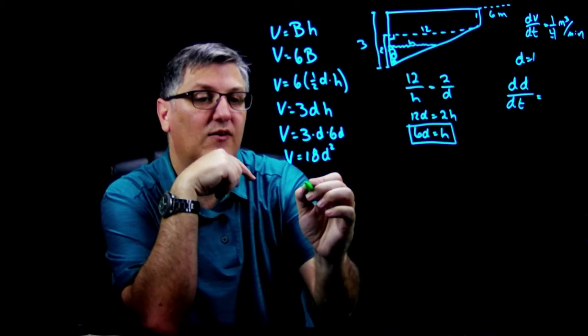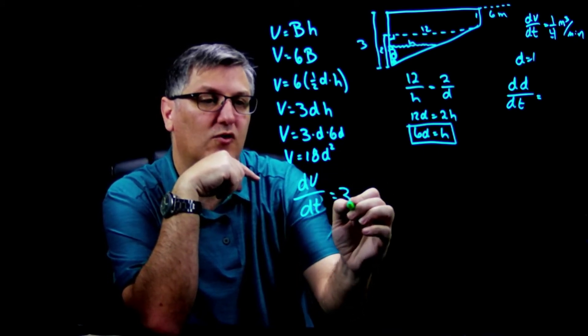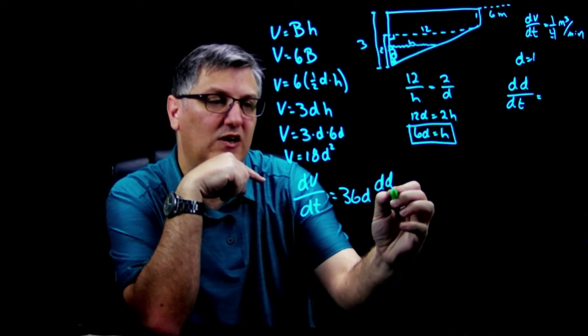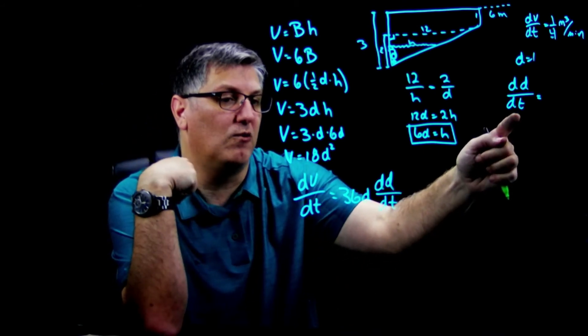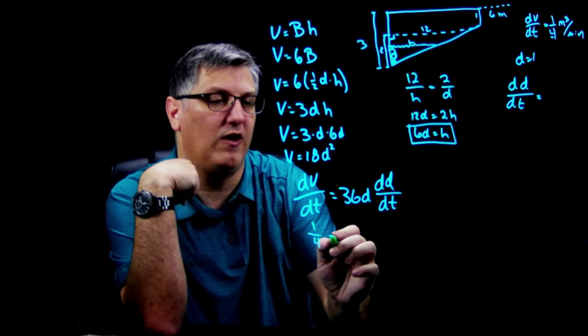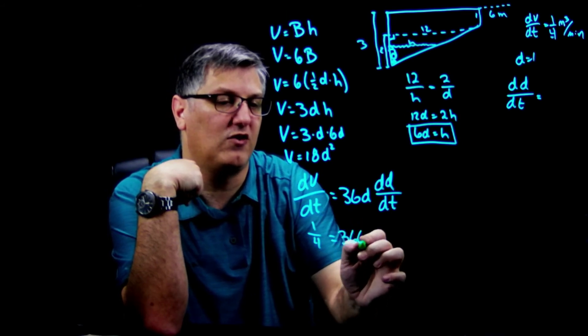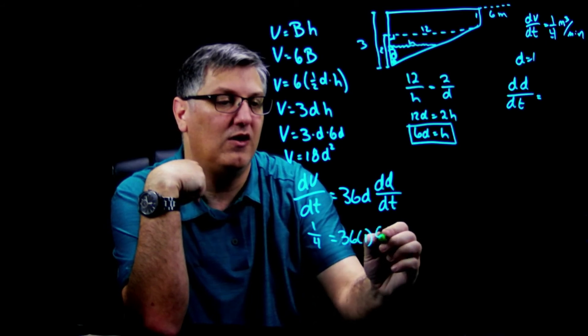I've got dV/dt = 36d(dd/dt). That's what I'm looking for! So let's substitute in. I know that this is 1/4 = 36 × 1 × dd/dt. Remember, in AP Calculus you've got to show the action of plugging this in.